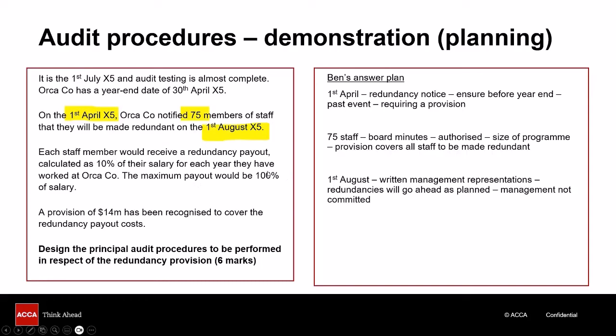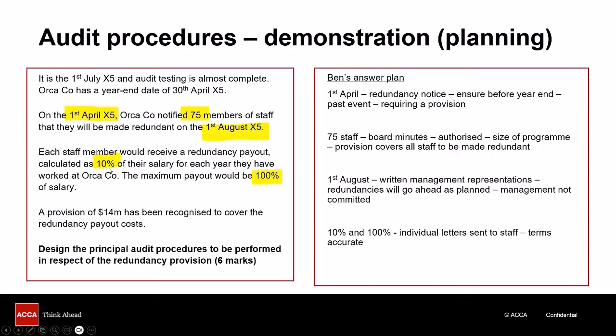This next paragraph contains specific facts: 10% and 100%. Those are definitely relevant because they're key inputs into the size of the $14 million provision. How would I verify that each member of staff has been told it will be 10% of salary per year with a maximum of 100%? That'll be in the redundancy notification letter. So in that individual letter sent to staff, I'm going to make sure the input terms are fully accurate. The provision must also be multiplied by salary and length of service for each person, so I'm going to agree those figures to the company's HR records to make sure the inputs into the calculation are correct.